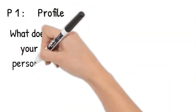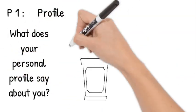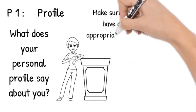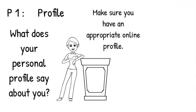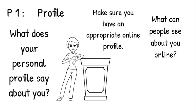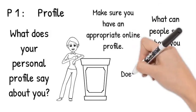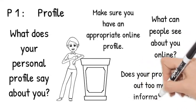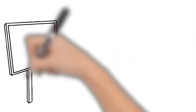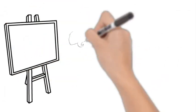P number one: profile. What does your personal profile say about you? Make sure you have an appropriate online profile. Ask yourself, what can people see about me online? Does your profile give out too much information? If it does, then change it.